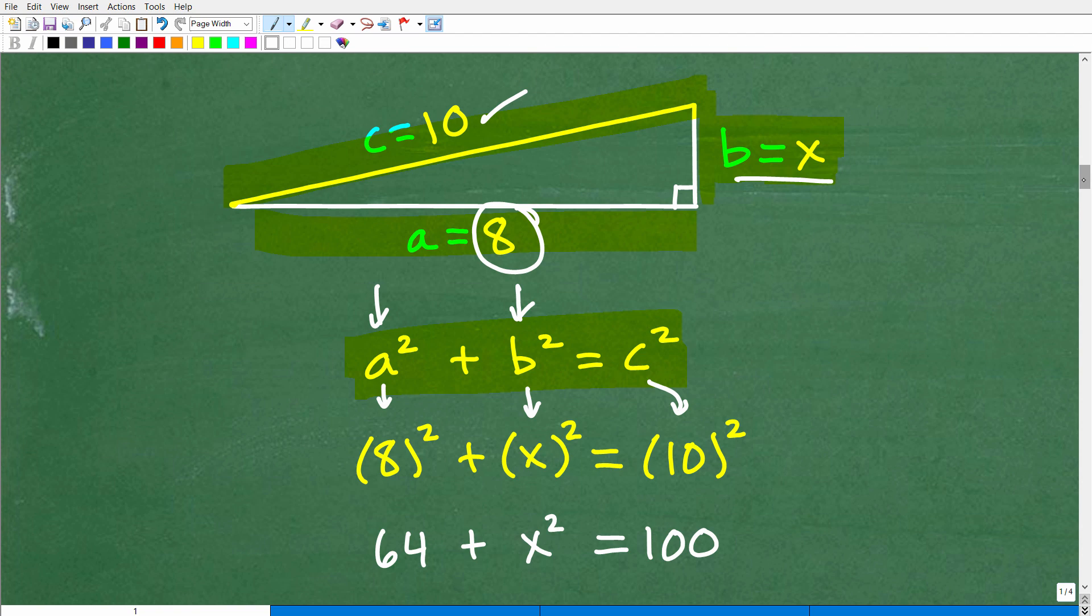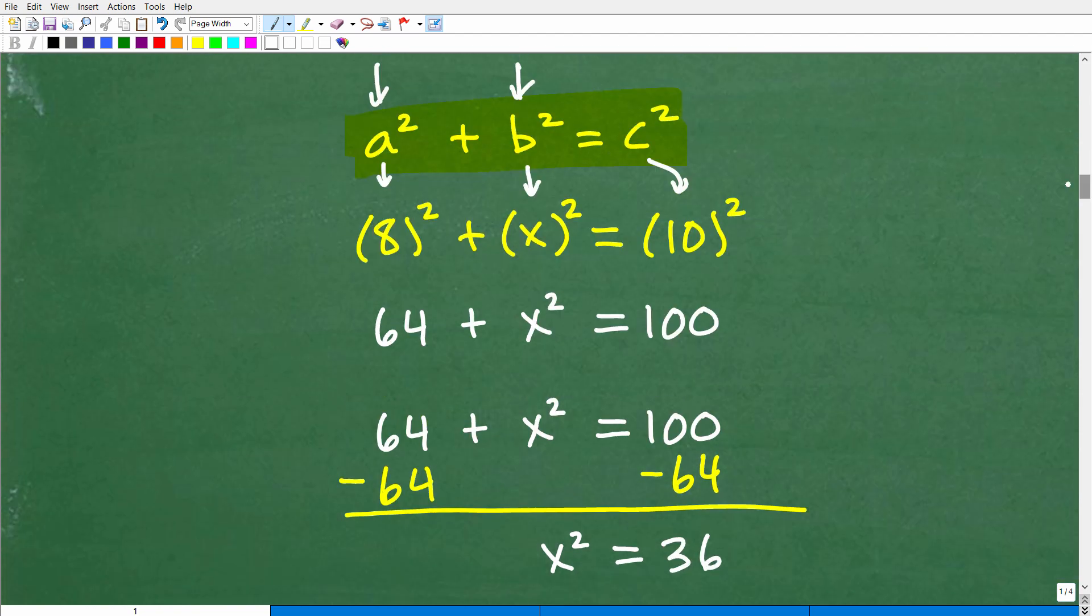So now we just go ahead and do some nice basic algebra. Nothing too difficult. So 8² is what? 64. 8 times 8 is 64. Plus x² is just x². And 10² is what? 100. 10 times 10.